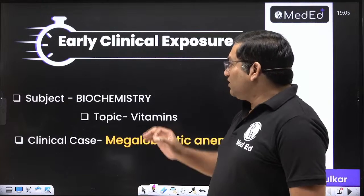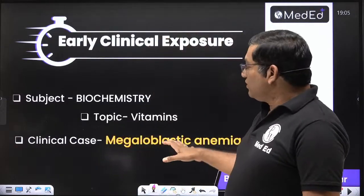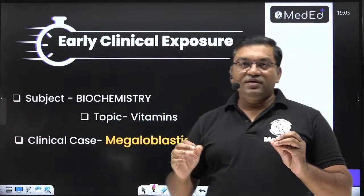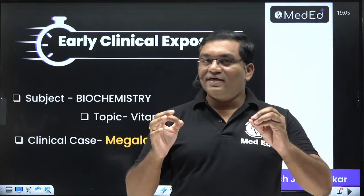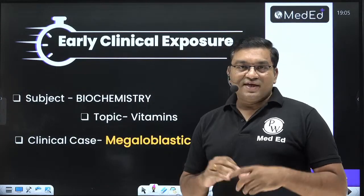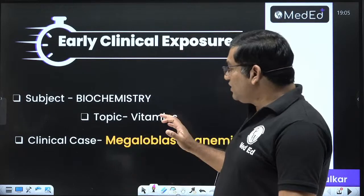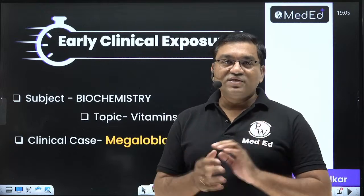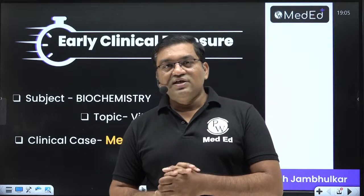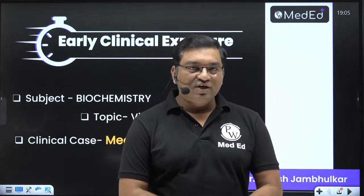The topic of discussion in the early clinical exposure series is megaloblastic anemia. This topic is related with the vitamin topic in biochemistry, known for important clinical cases. Two important vitamin deficiencies cause megaloblastic anemia: mainly B12 deficiency or folic acid deficiency. There is also a third disorder, orotic aciduria, which also causes megaloblastic anemia.